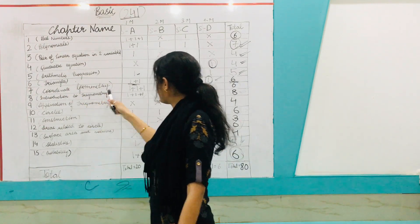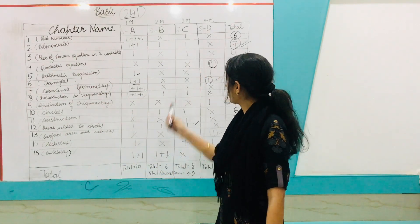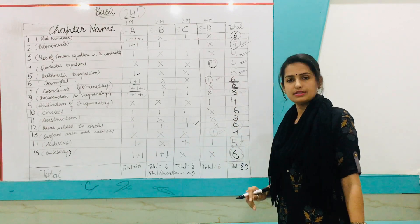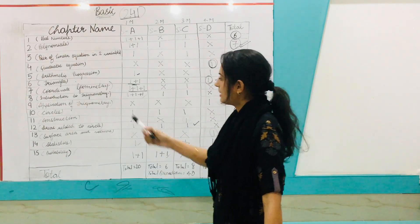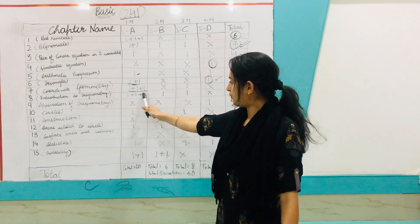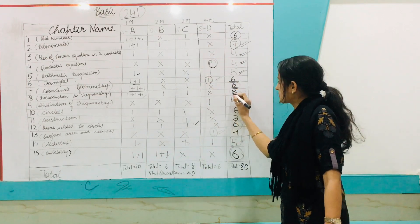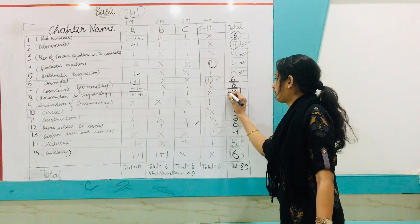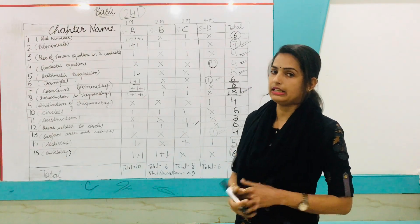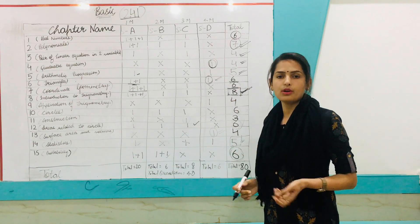Chapter 7, Coordinate Geometry — there will be three questions of one mark each and one question of three marks, totaling six marks. Chapter 8, Introduction to Trigonometry — three questions of one mark each, one question of two marks, and one question of three marks. This chapter totals eight marks, making it the highest-marks chapter in the board exam, so prepare it very carefully.